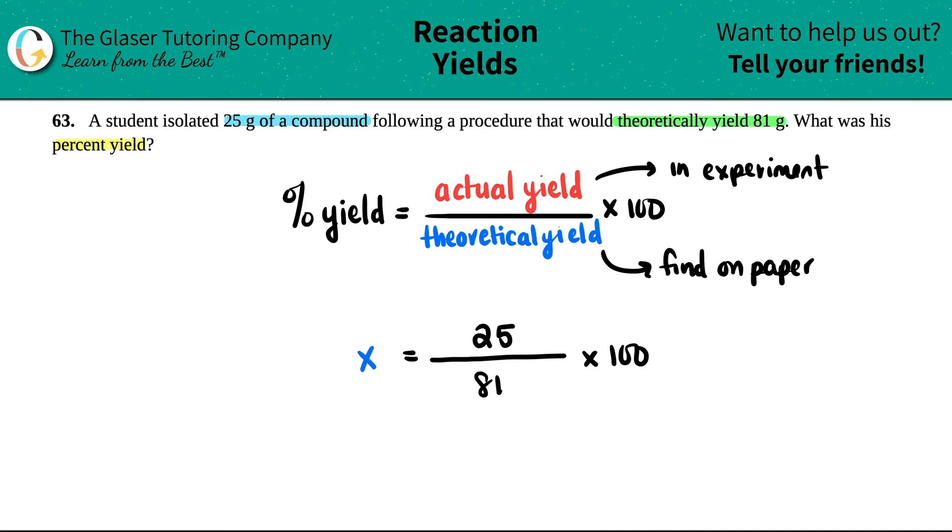Now we just use algebra. I'll divide by 100, right? I'll divide by 100. Actually, actually no, it's x equals this, so I don't even have to do that. I could just do this straight division and then multiplication. So I'll just say 25 divided by 81 times 100.